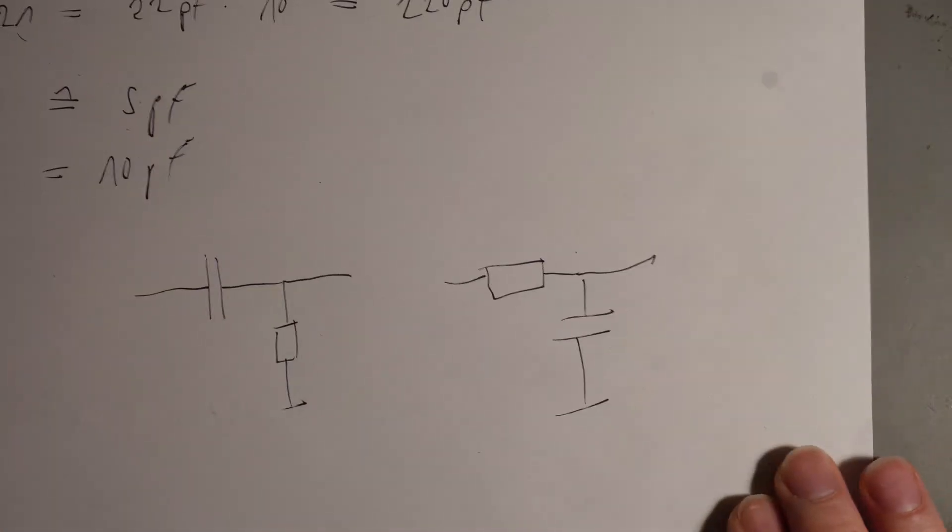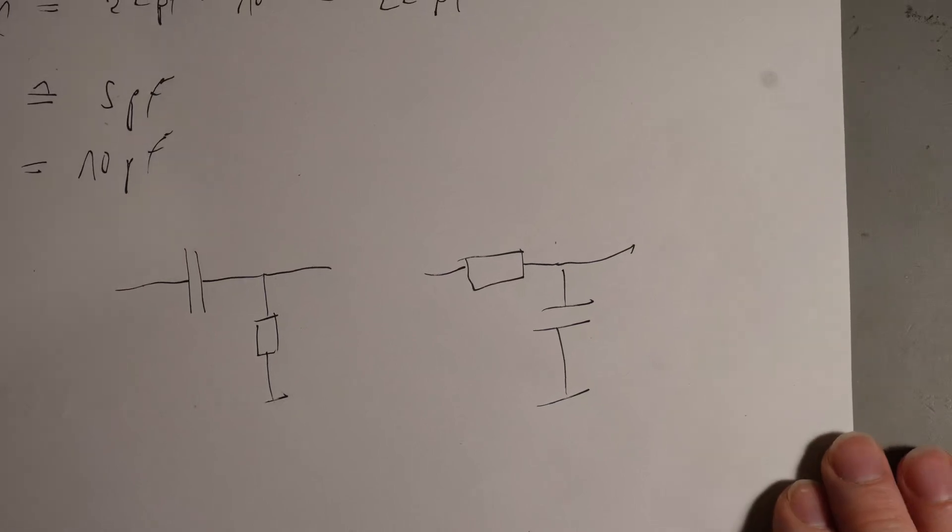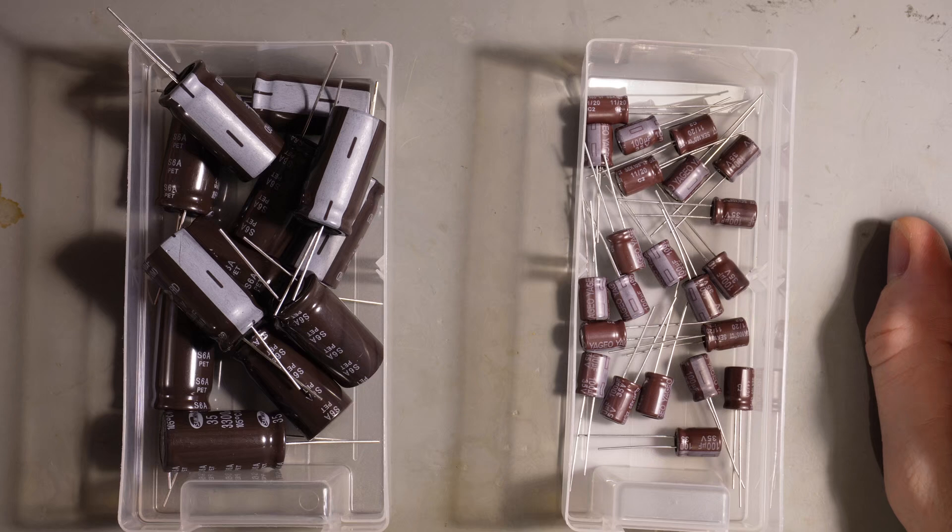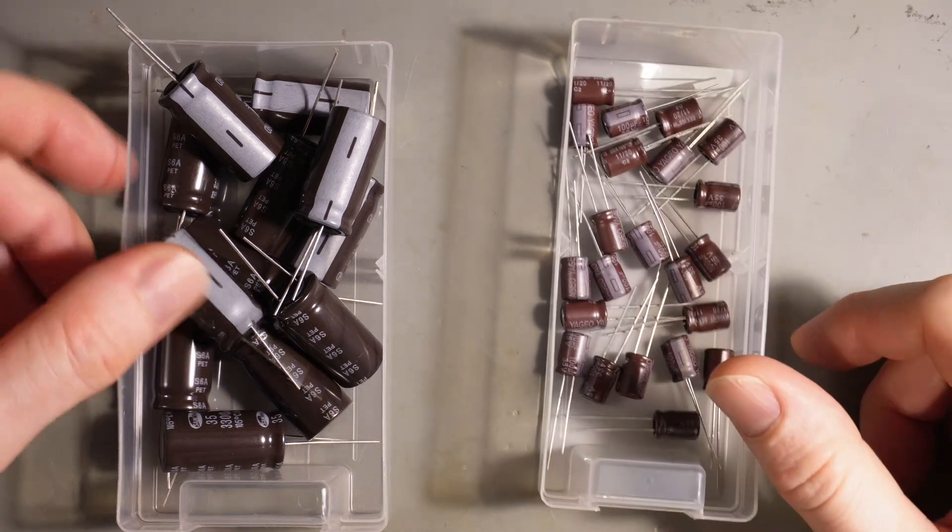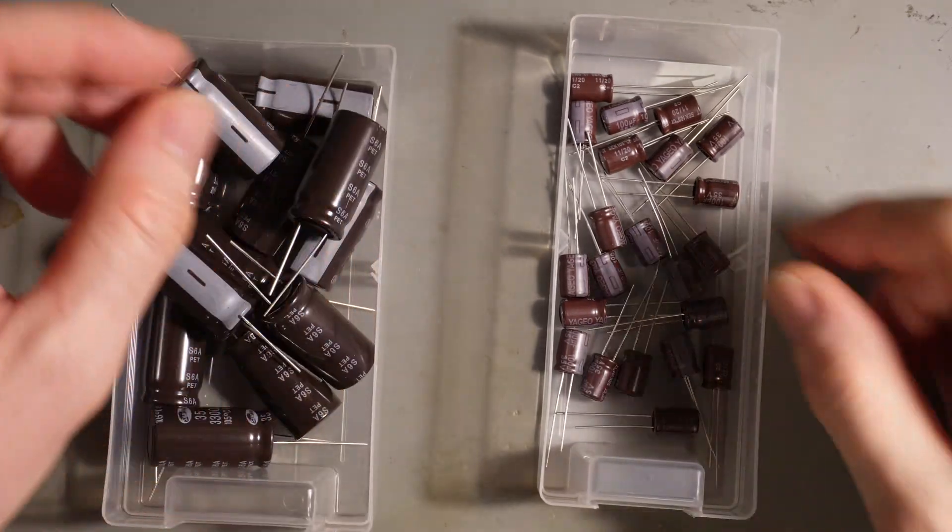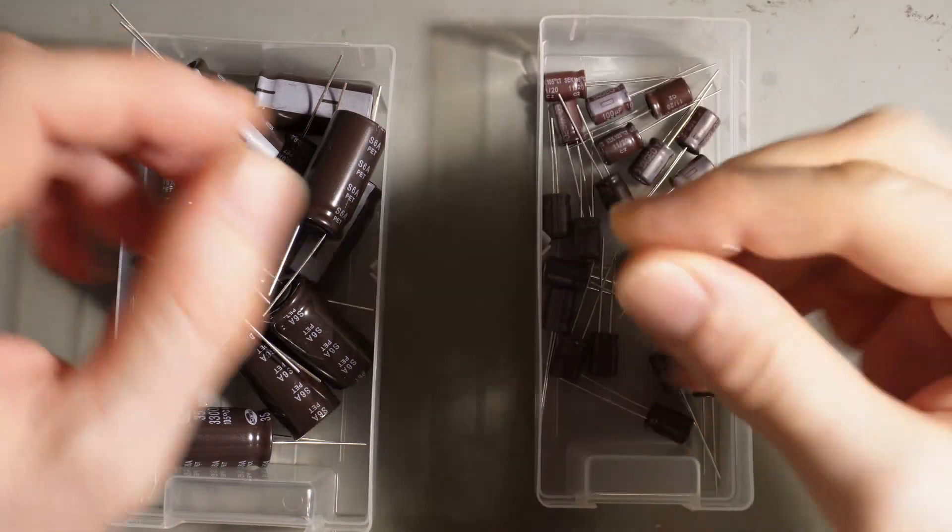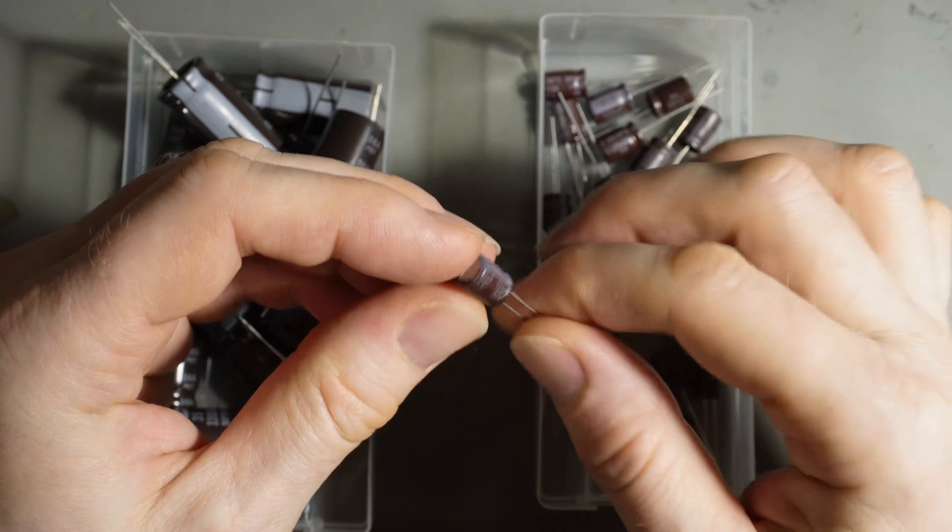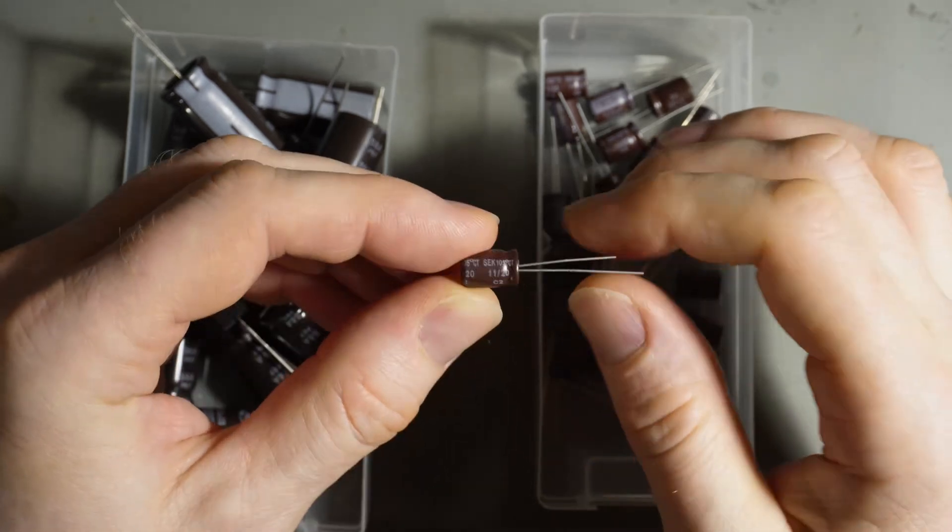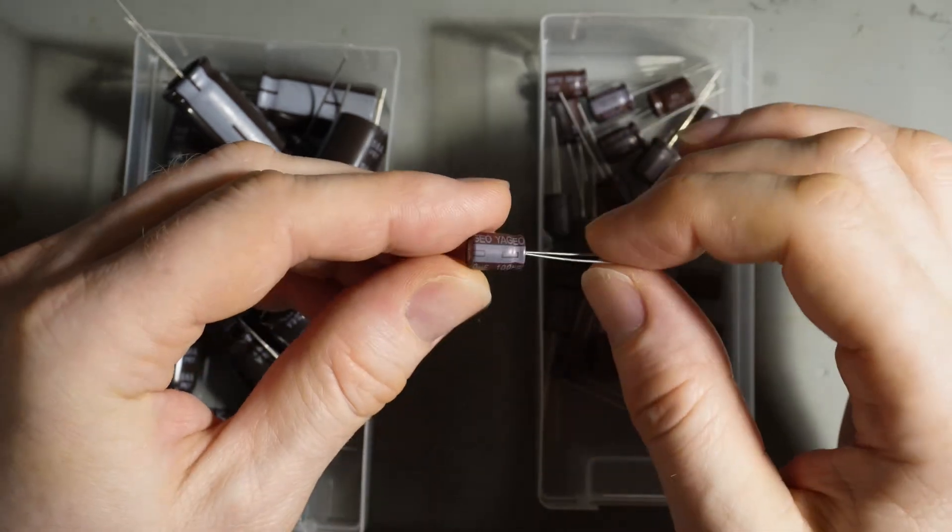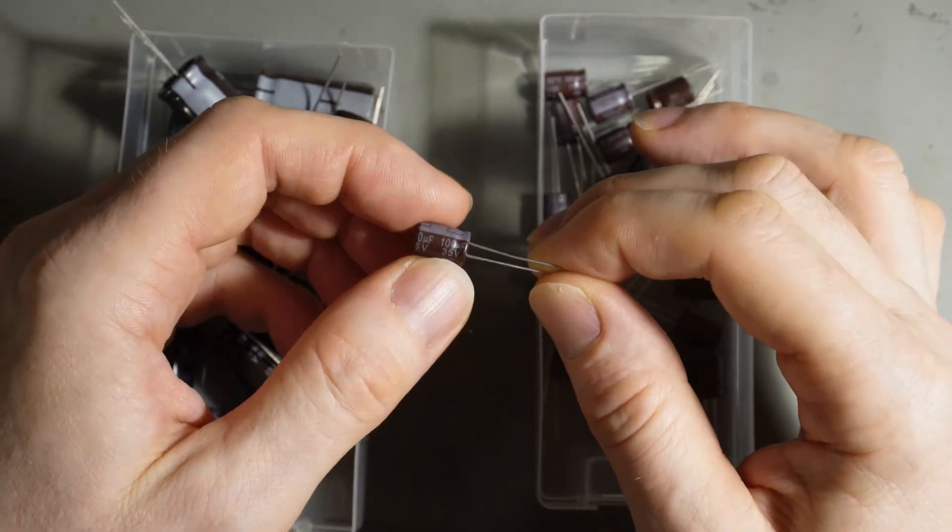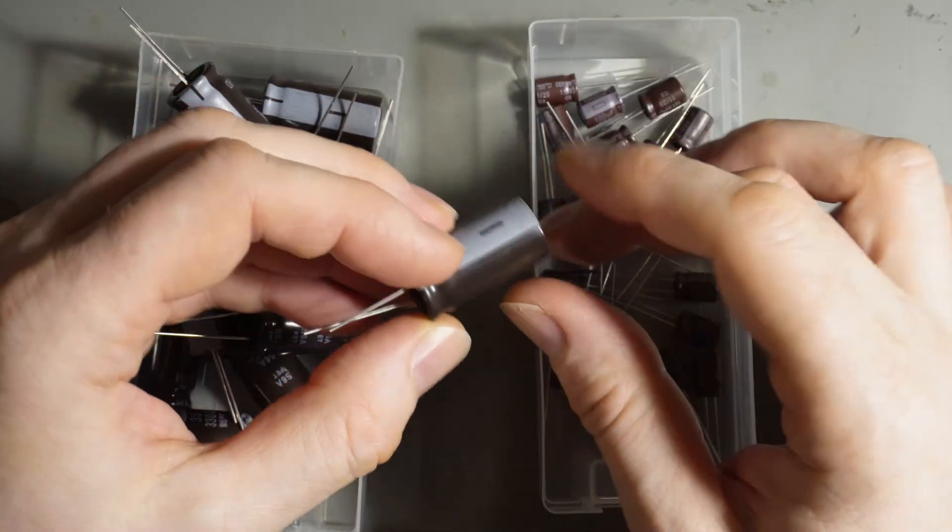Next would be electrolytic capacitors. So this here would be some examples. Depending on the capacitance they come in different sizes. This here is a 100 microfarad capacitor and here it's for up to 35 volts and they become also much bigger.